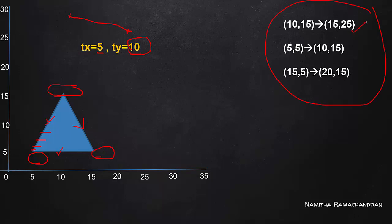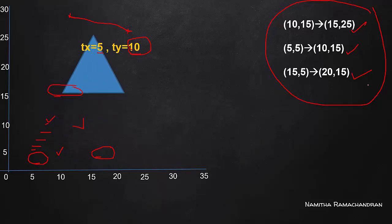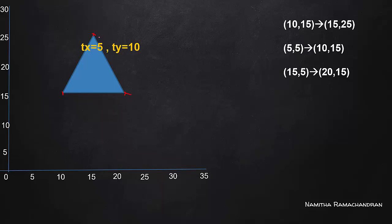So this is how we apply translation. We have three new vertex coordinates, and by joining them with straight lines, the same triangle is recreated at the new translated location. That is all about 2D translation. Thank you.